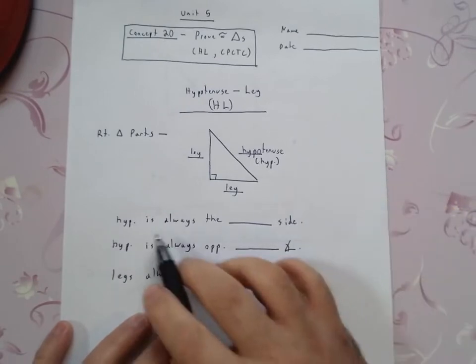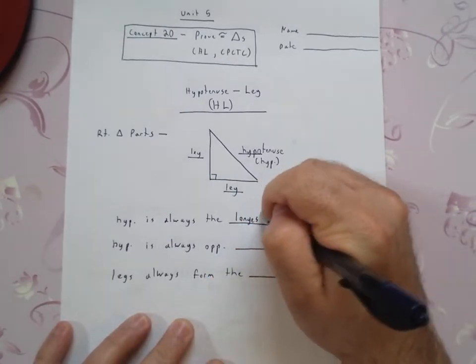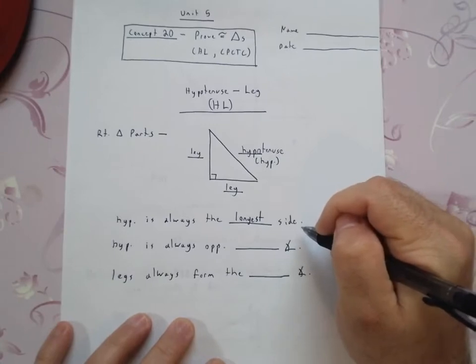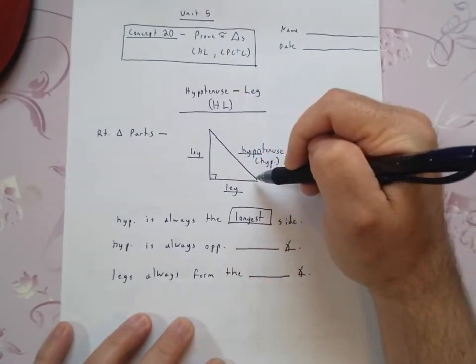So a couple things that you need to know. The hypotenuse is always the longest side on the right triangle. It's always the longest side, hence why it's over here.